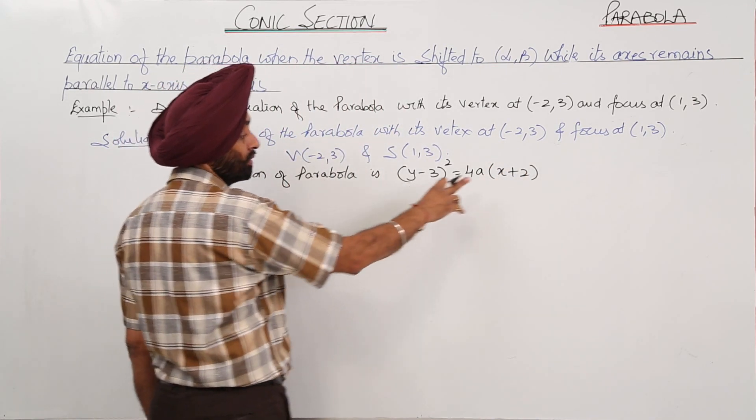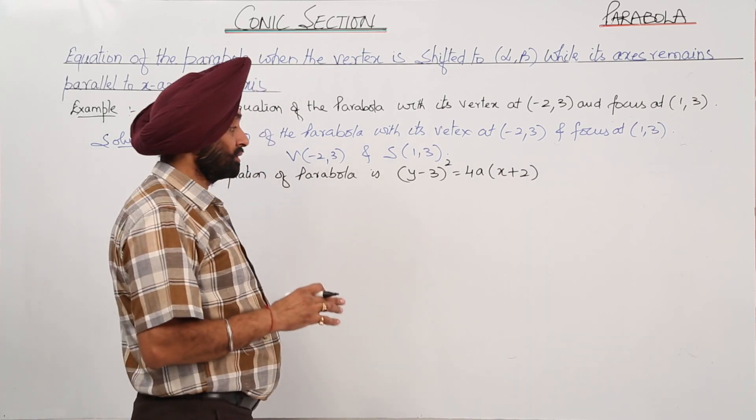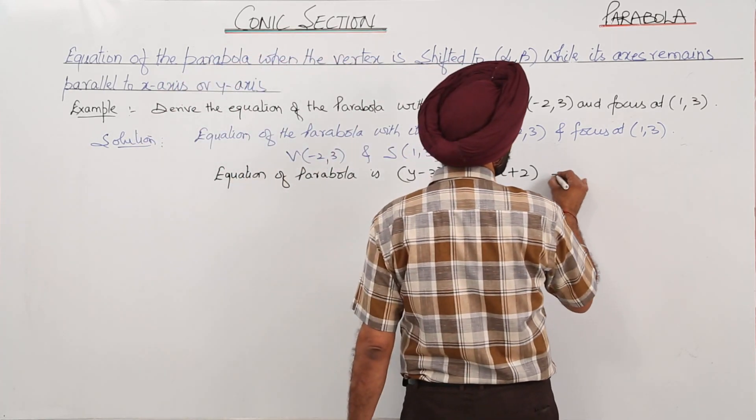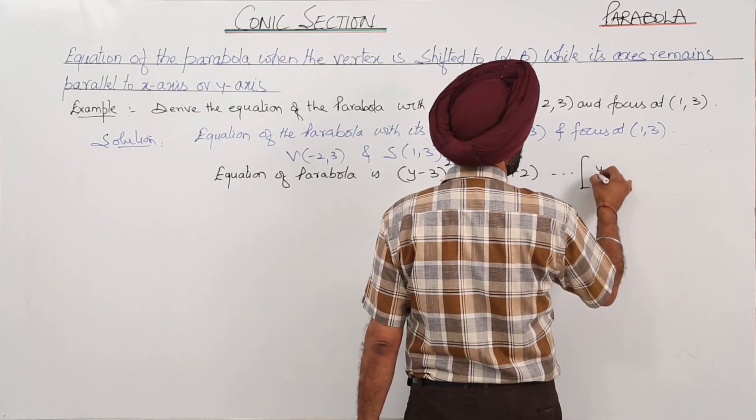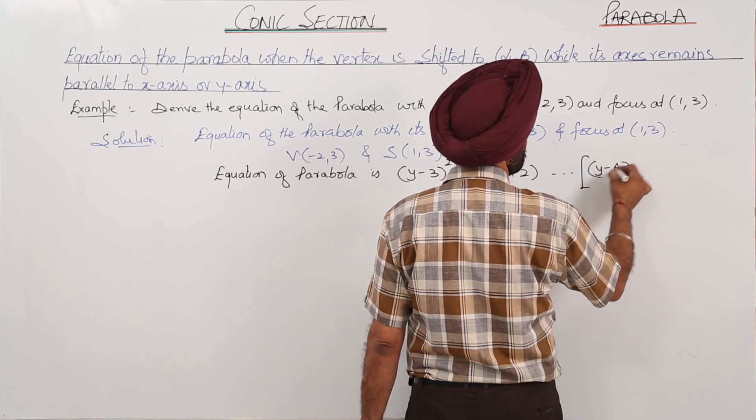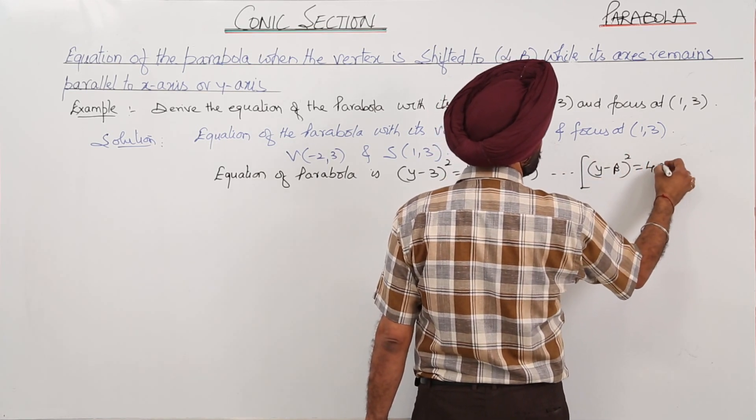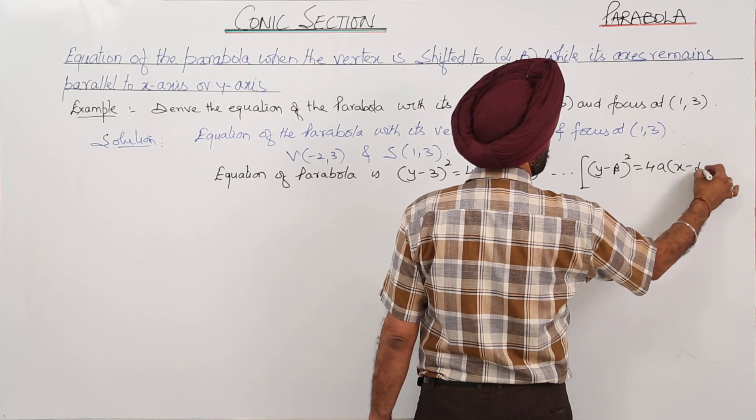Negative of 2 and negative of x minus a, this becomes positive of 2. (y-β)² = 4a(x-α).